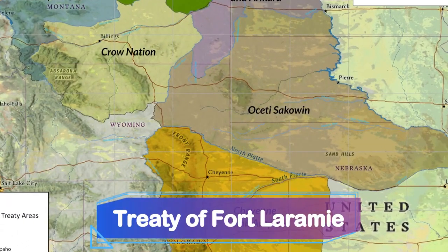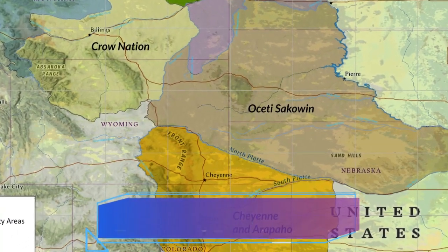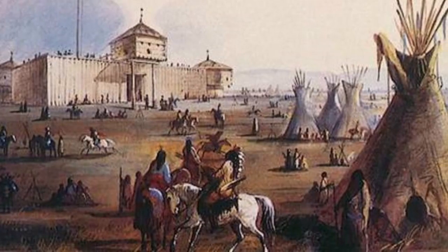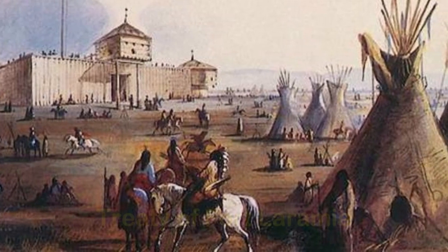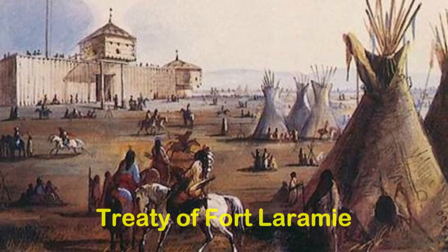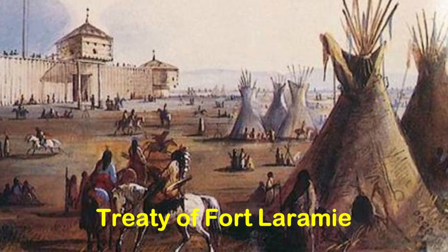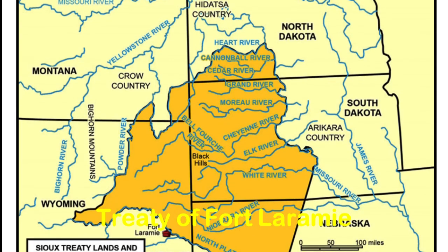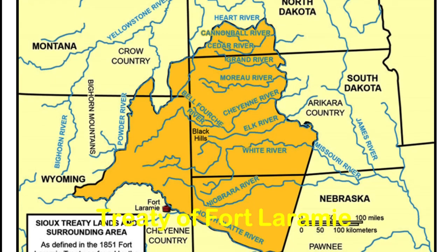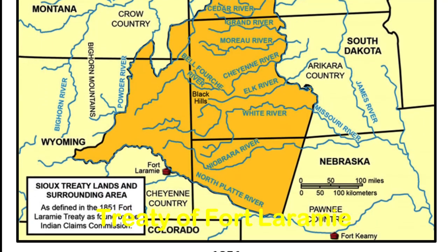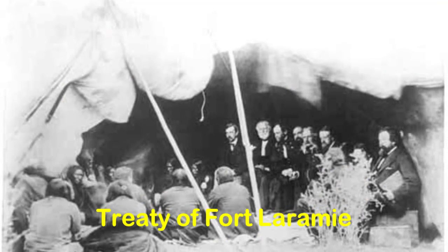In 1851, the Treaty of Fort Laramie was signed between the United States government and various Native American tribes. The treaty aimed to bring about peace and define territories in the Great Plains region. It designated specific areas as Native American lands and allowed for the safe passage of settlers traveling westward. The treaty also established boundaries and promised annuity payments and other provisions to the tribes. However, the treaty was not without controversy, as subsequent events and conflicts would ultimately undermine its intended goals.